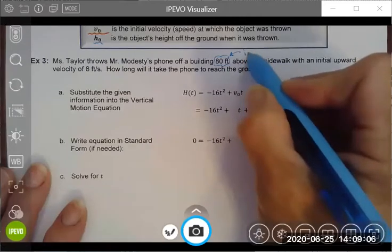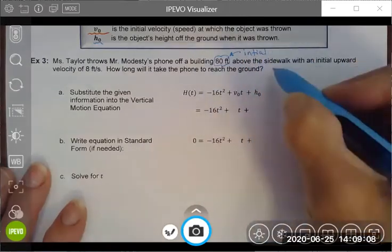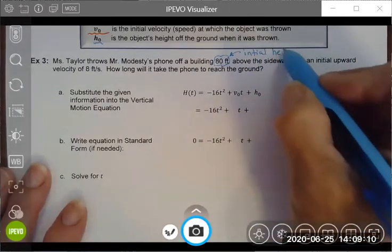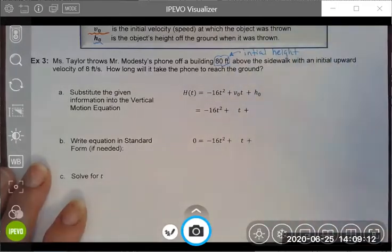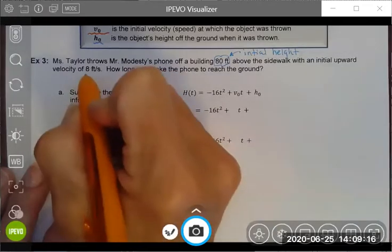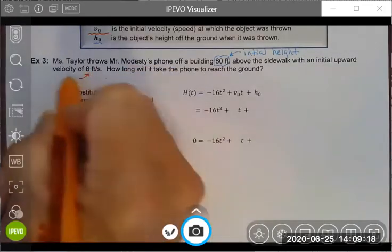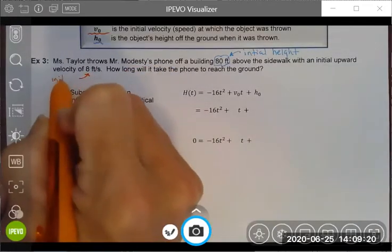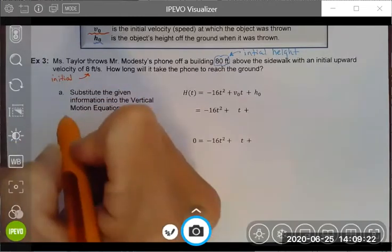Taylor is already up on the roof when she throws this, or on the top of the building or somewhere way up high. My initial velocity or my speed is going to be 8 feet per second.